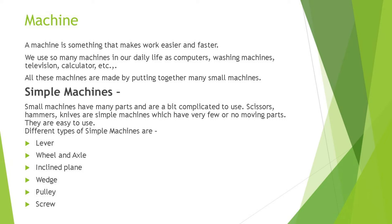Complex machines have many parts and are a bit complicated to use — like scissors, hammers, and knives. Simple machines have very few parts or no moving parts and are easy to use. The different types of simple machines are: lever, wheel and axle, inclined plane, wedge, pulley, and screw. We will discuss each one by one.